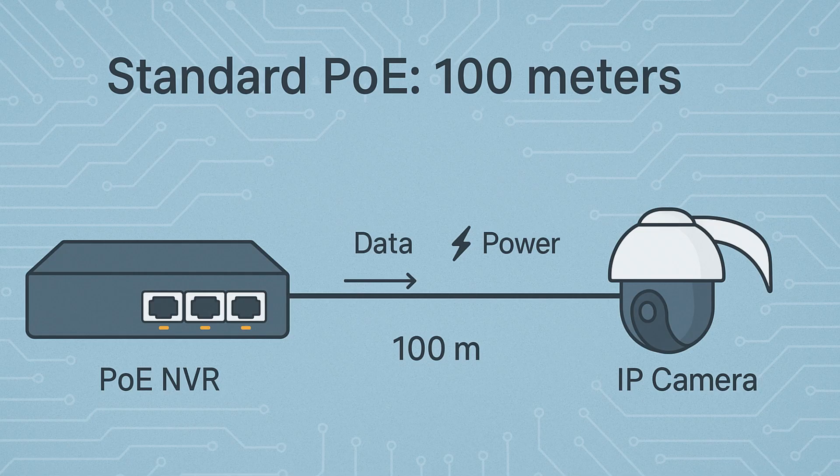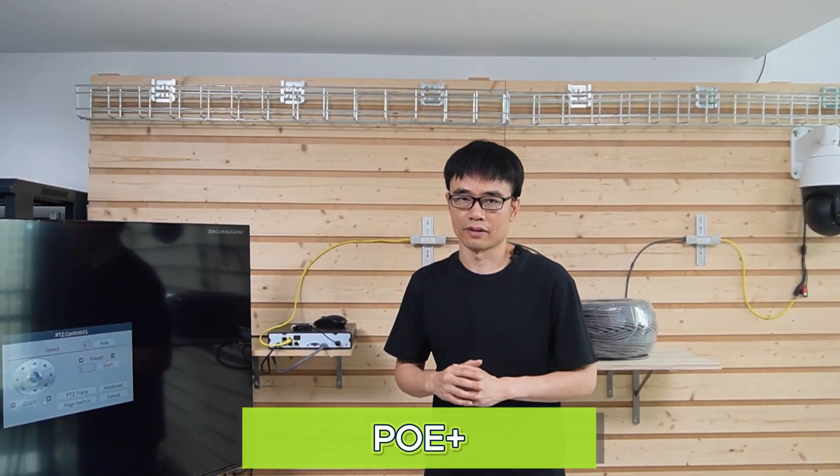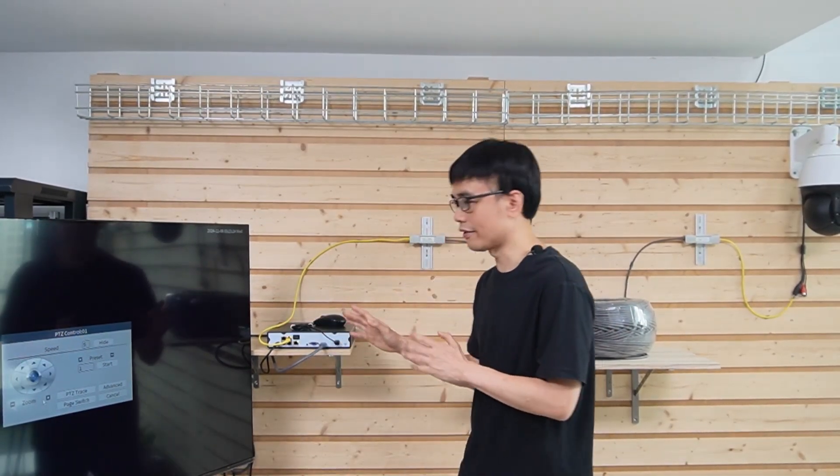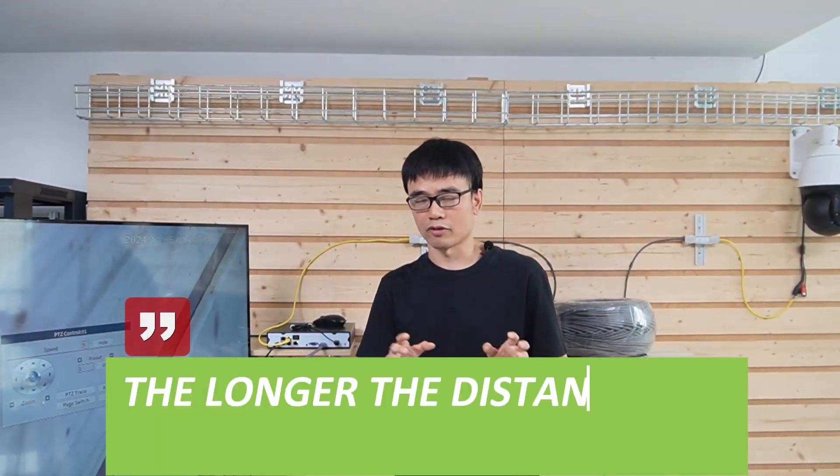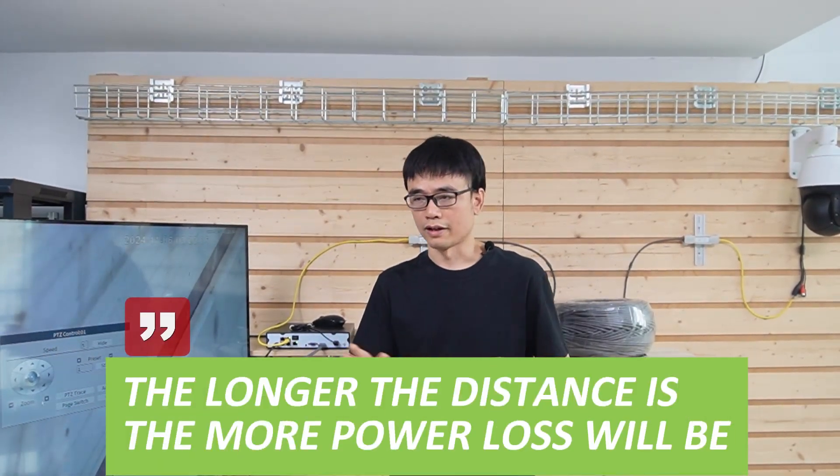In the standard PoE design, within 100 meters, the power budget is enough, both ends support the PoE price. The client just extends the network up to 300 meters, which is three times longer distance than the standard PoE. Remember we said, the longer the distance, the more power loss will be. In this setup, it creates three times power loss than the standard PoE.